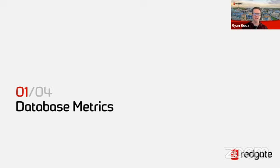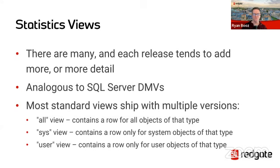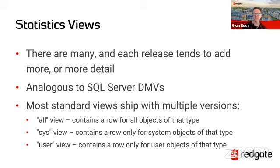The first topic is database metrics. There are many statistical views within the Postgres database and ecosystem. When you set up a Postgres server, you automatically get these views. If you're coming from something like SQL Server, this is very similar or analogous to the dynamic management views — DMVs. So if you want to get information about tables, indexes, or the database itself, there are views specific to those various areas, much like what you're used to in SQL Server. One thing to note is there are not quite as many as in SQL Server.